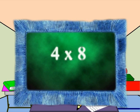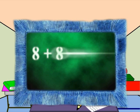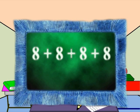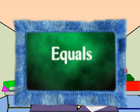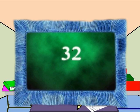If we take a problem like four times eight, this is the same as eight plus eight plus eight plus eight. If we add them together, we get thirty-two.